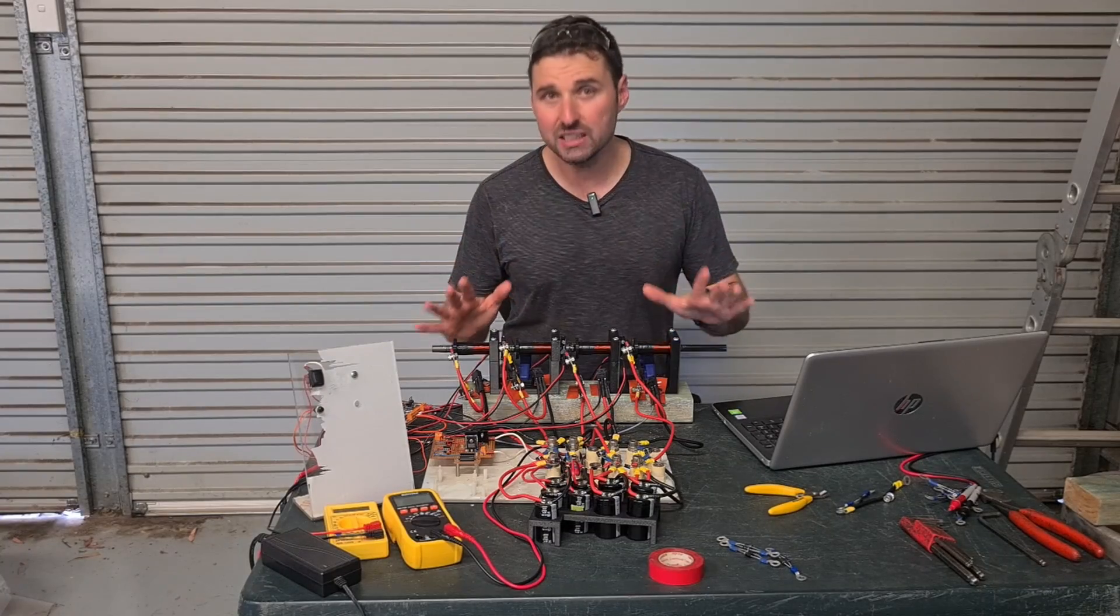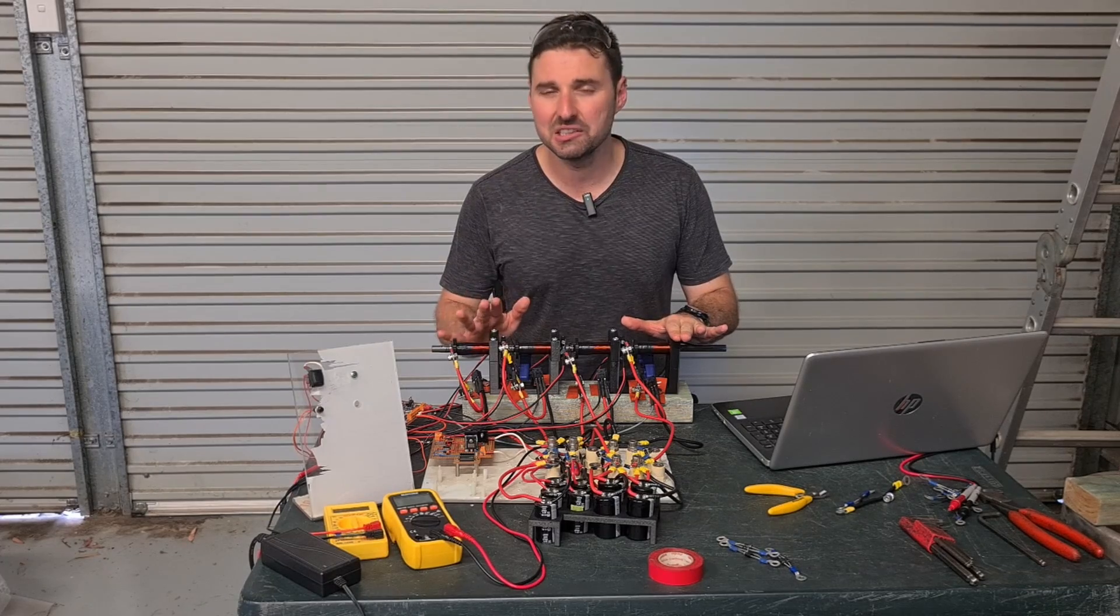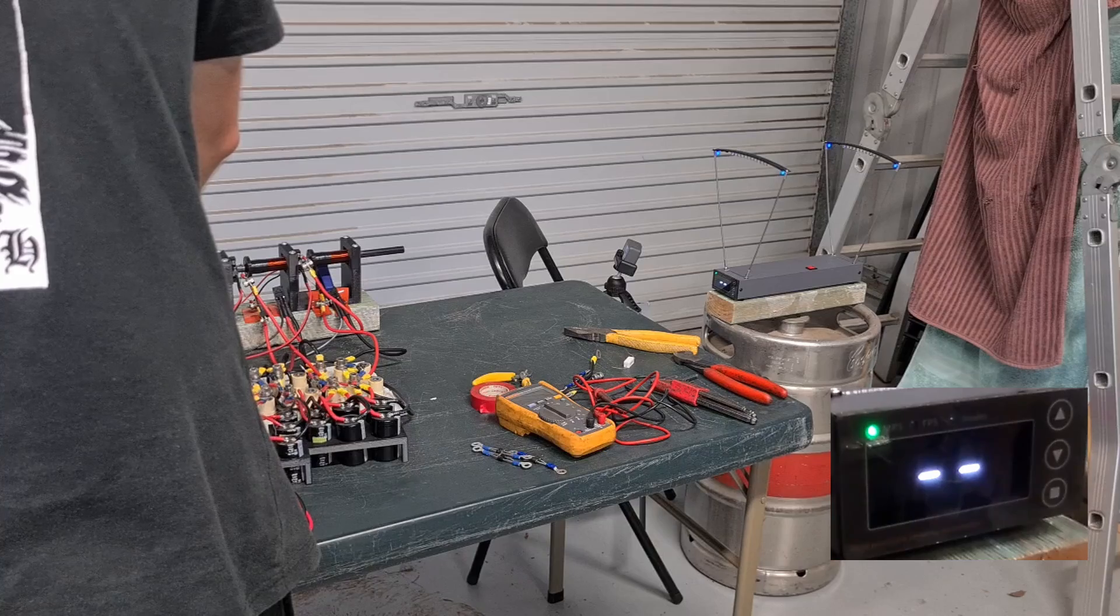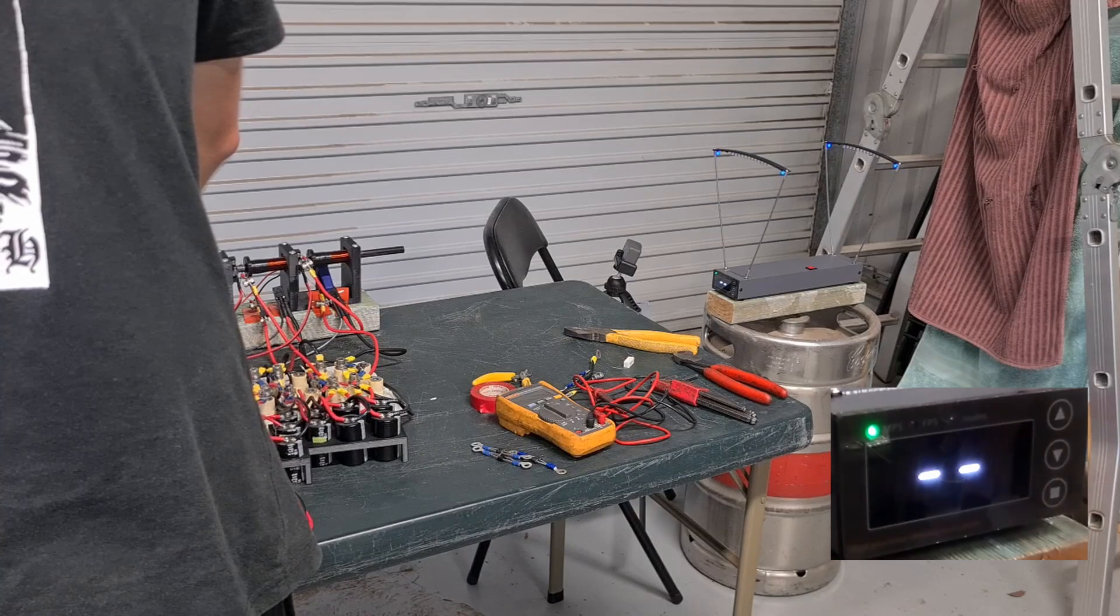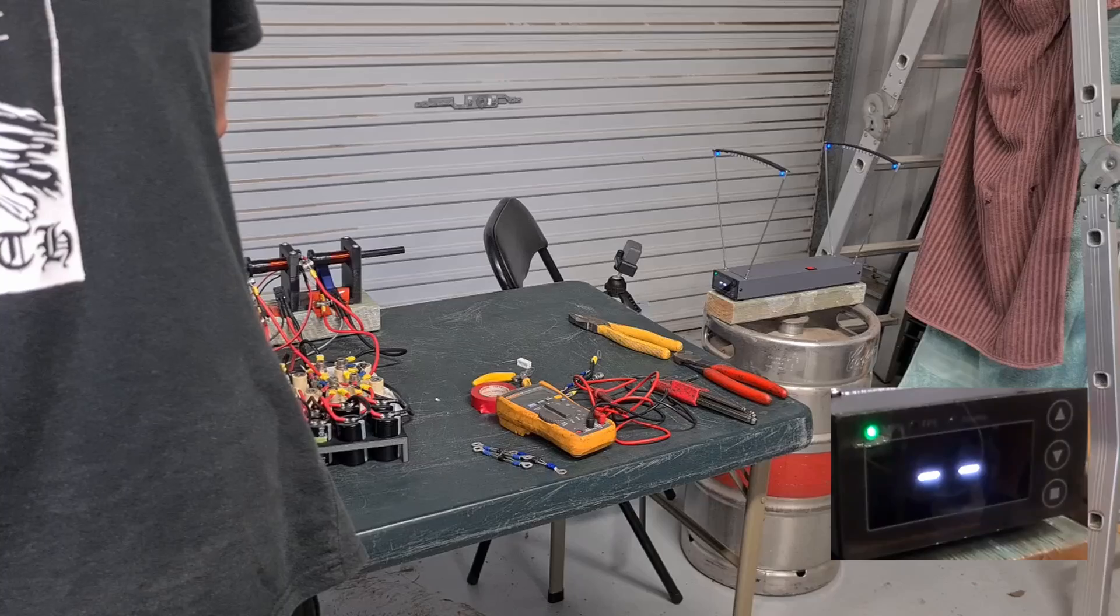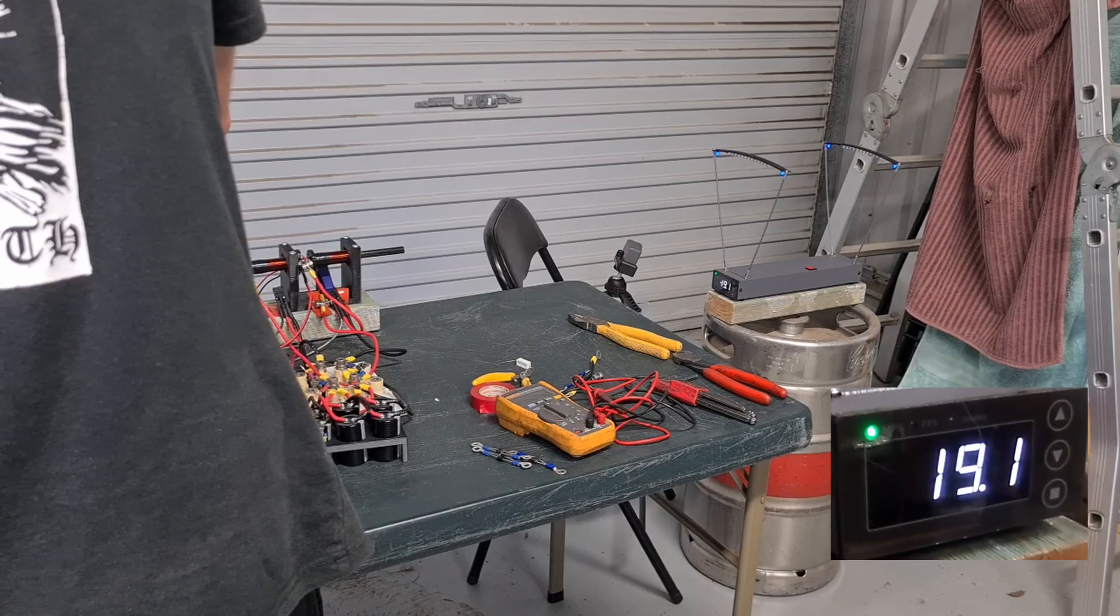So to test everything is working correctly and to set a baseline, we will fire the first shots discharging the capacitor bank completely. When doing this, the 15 millimeter long projectile reaches a top speed of 22.4 meters a second and the 30 millimeter long projectile reaches a top speed of 19.1 meters a second.